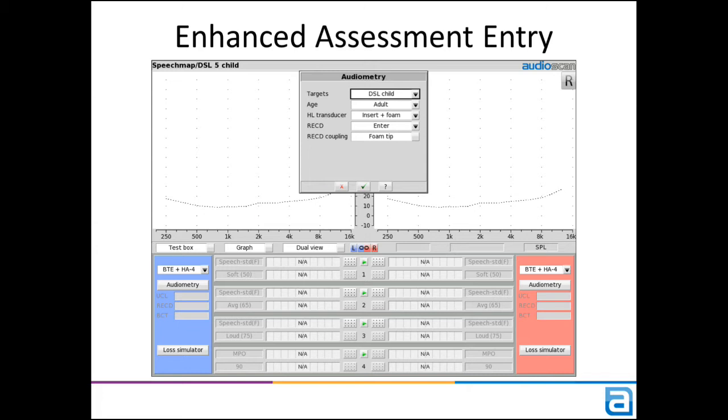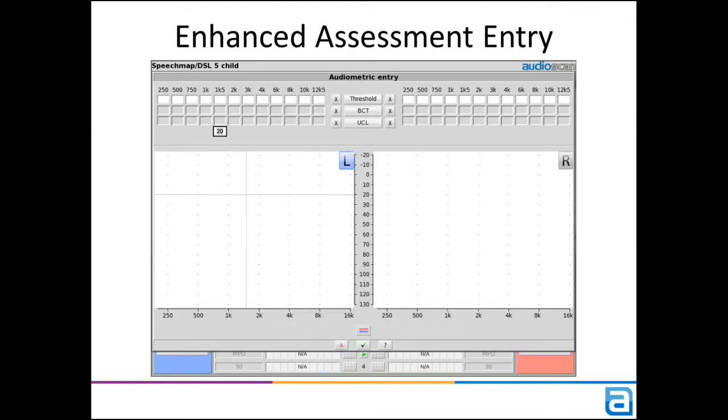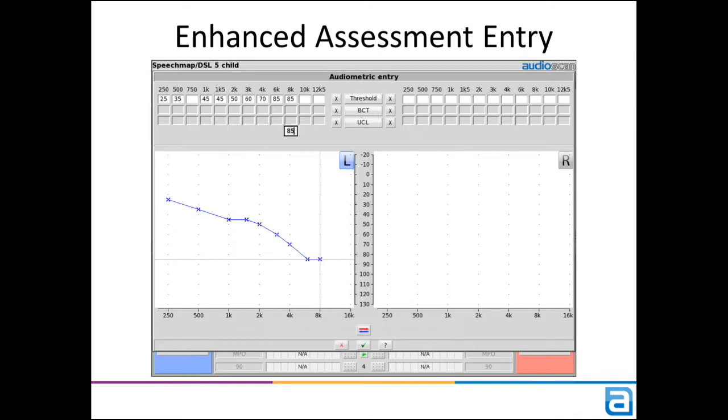However, when you click on the Continue button, you're presented with a new dual view entry screen. Click in the graph to enter an audiogram. Note that once data has been entered for one ear, this Copy button at the bottom is activated. Clicking this will copy the same curve to the opposite, empty side. This is of course a time saver for symmetric losses.